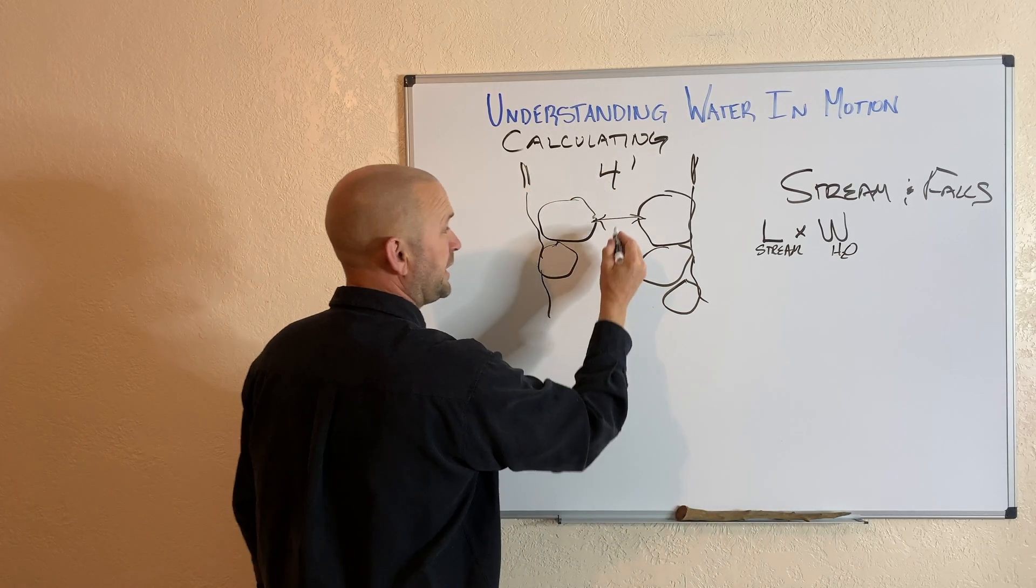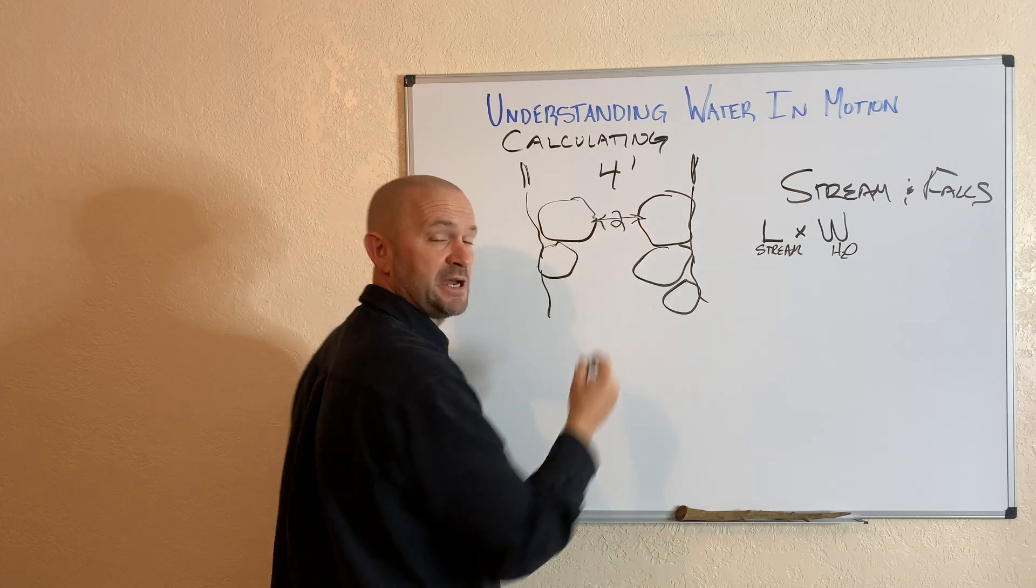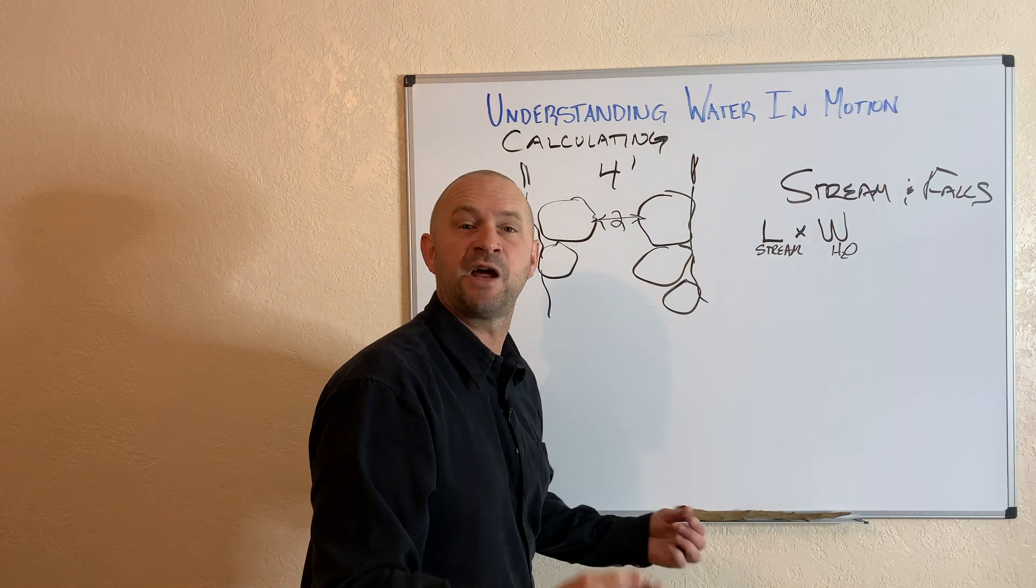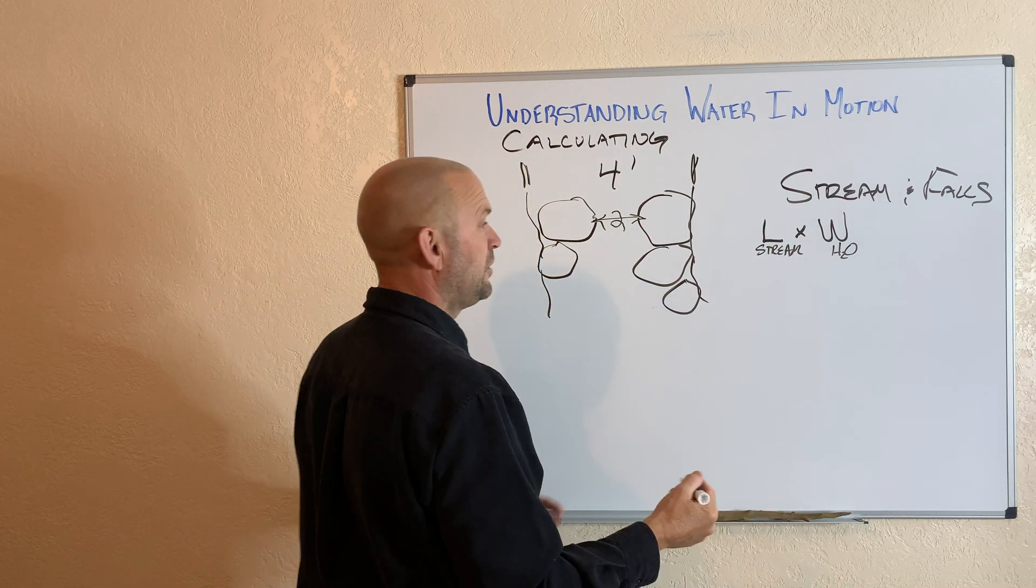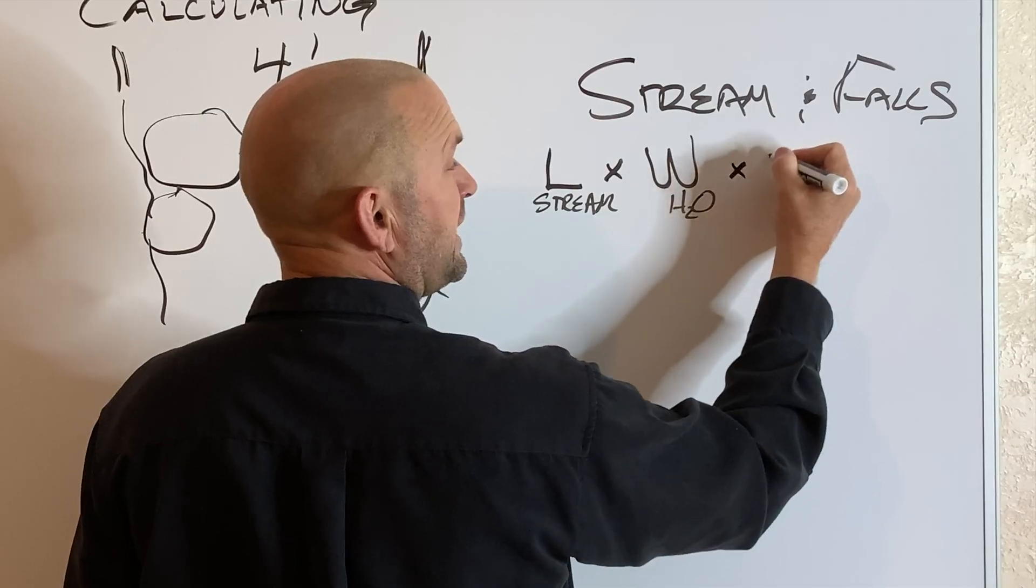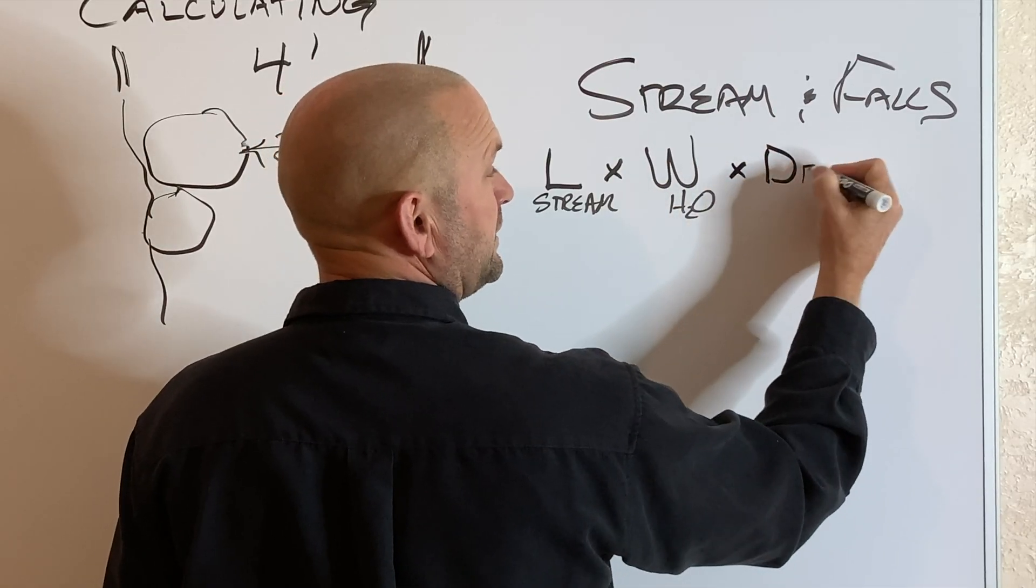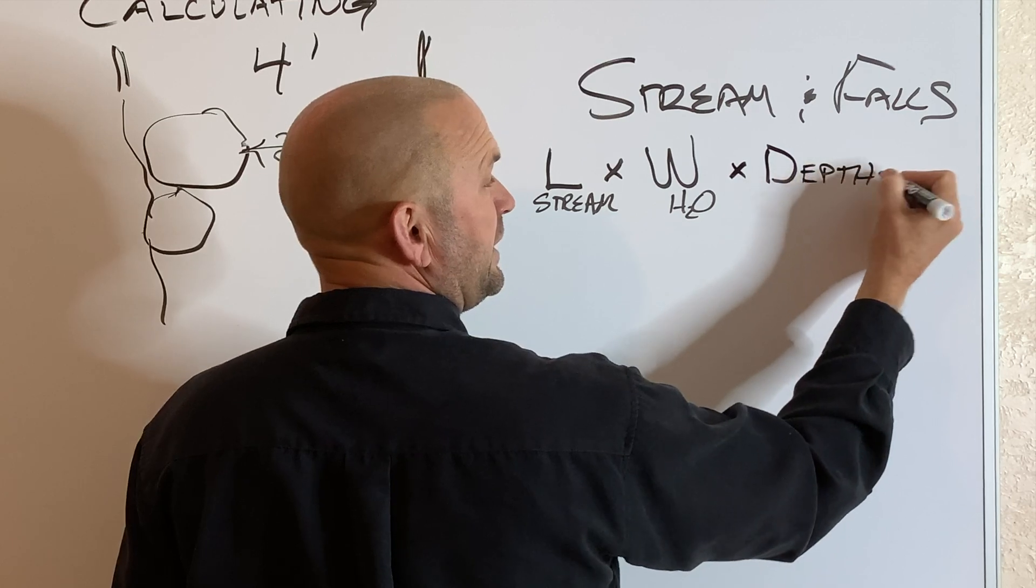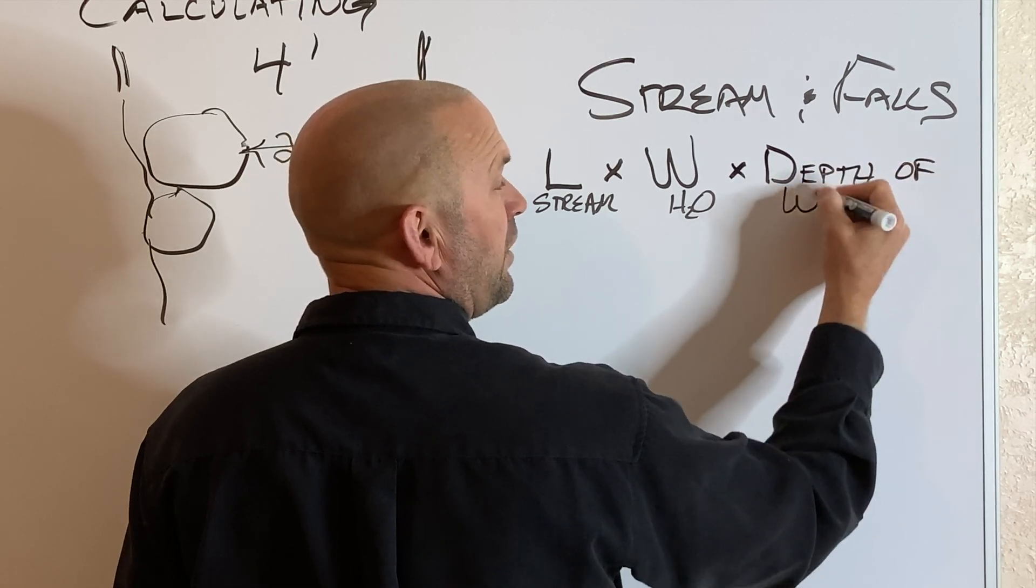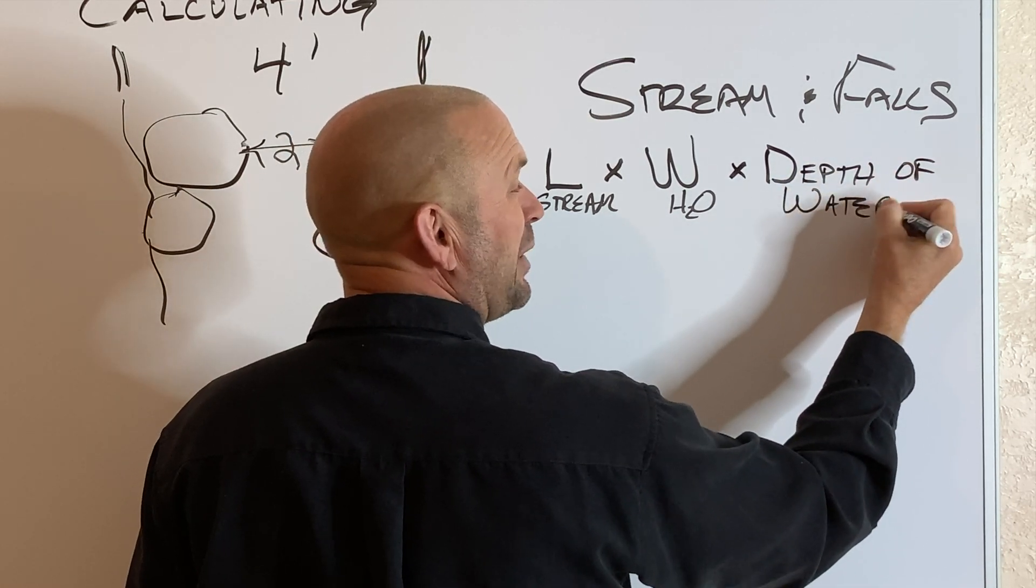So we're going to say your water is two feet wide as an average. This is a ballpark. Times the depth of the water. Very important here, depth of water. Again, it's a ballpark figure.